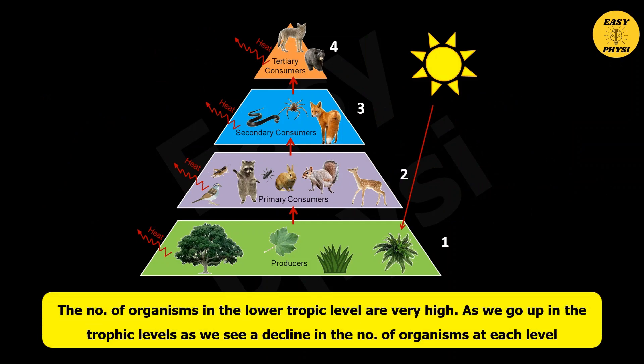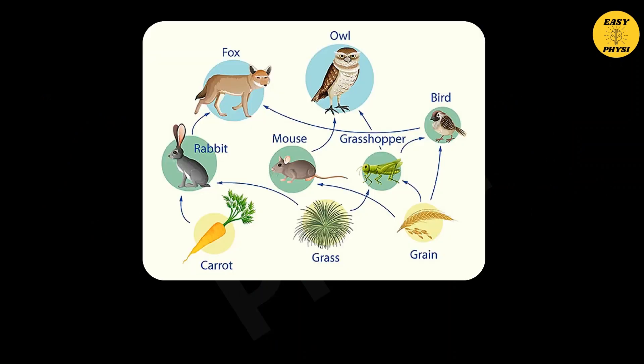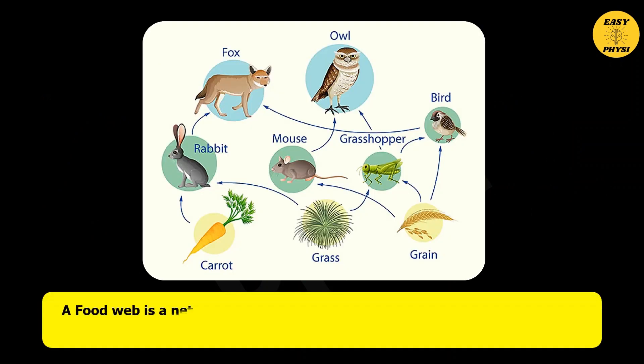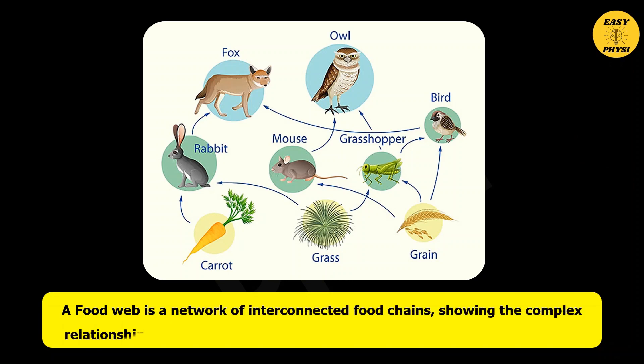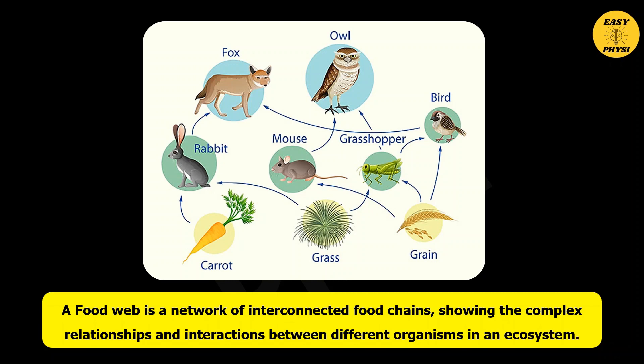The number of organisms in the lower trophic level is very high; as we go up in the trophic levels, we see a decline in the number of organisms at each level. A food web is a network of interconnected food chains showing the complex relationships and interactions between different organisms in an ecosystem.